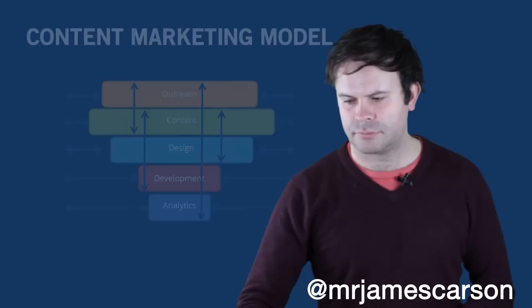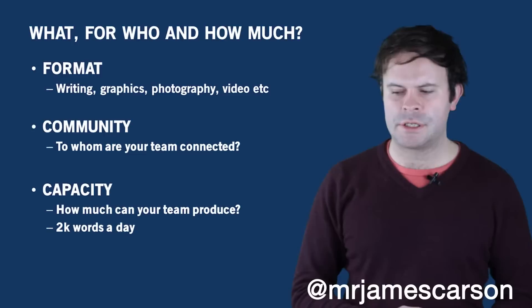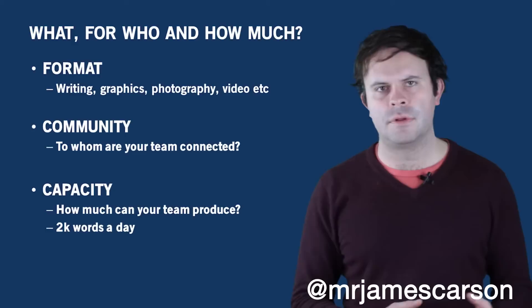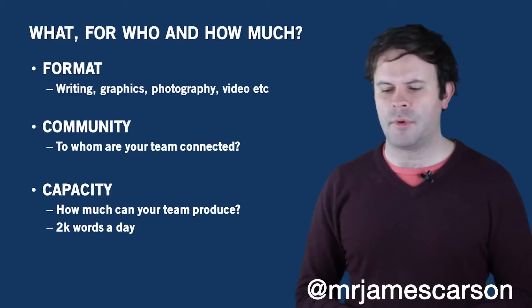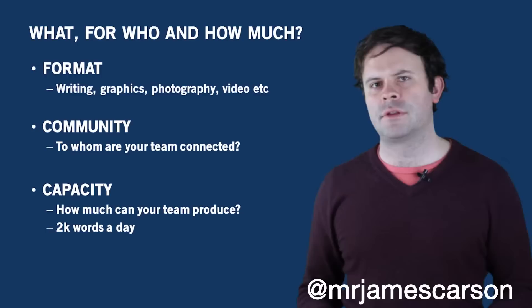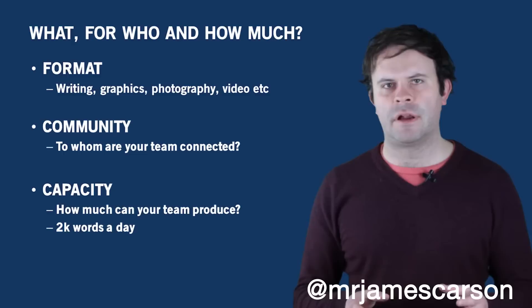What, for who, and for how much is the way to measure production. Think about your team's skills and the formats they can produce — writing, graphics, photography, or video. Community is about who your team is connected to, such as a content creator's social media following and who they can syndicate to. Capacity is how much your team can produce — that might be 2,000 words a day for a writer, or one infographic every two days. You need to cover those five bases: analytics, development, design, content, and outreach.